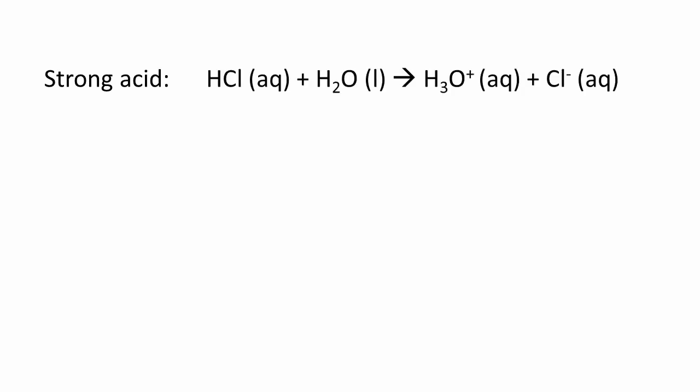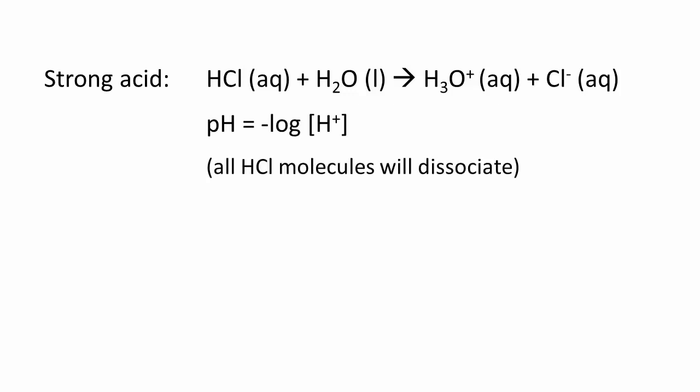Calculating the pH of a solution of a strong acid is easy. Each molecule of the acid will dissociate in water to produce a hydronium cation, and the pH is easily calculated. The same applies to the calculation of the pOH when we have a strong base.